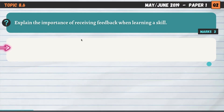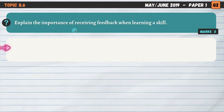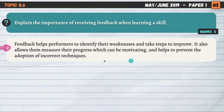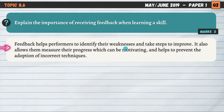Question number three is on topic 8.6, feedback. Explain the importance of receiving feedback when learning a skill — another really common question worth three marks, meaning we need three distinct points. Feedback helps performers to identify their weaknesses and take steps to improve. By receiving feedback about our performance, we can see what we didn't do too well and make changes to improve in the future.